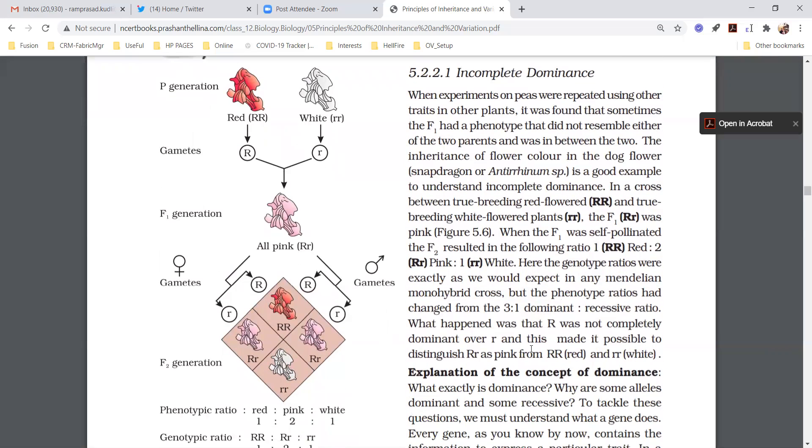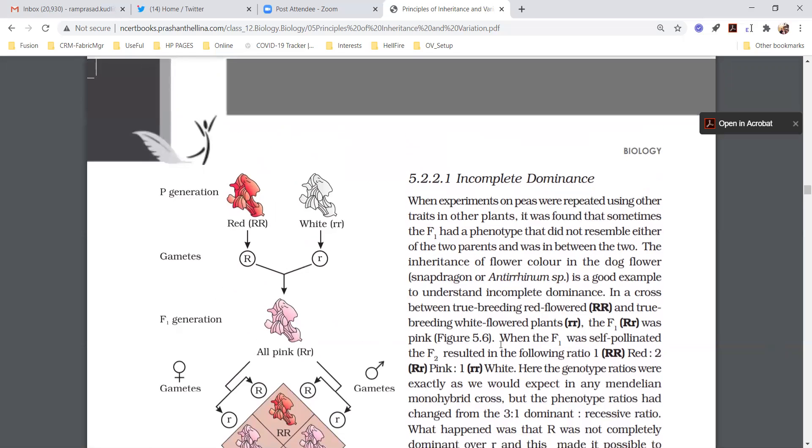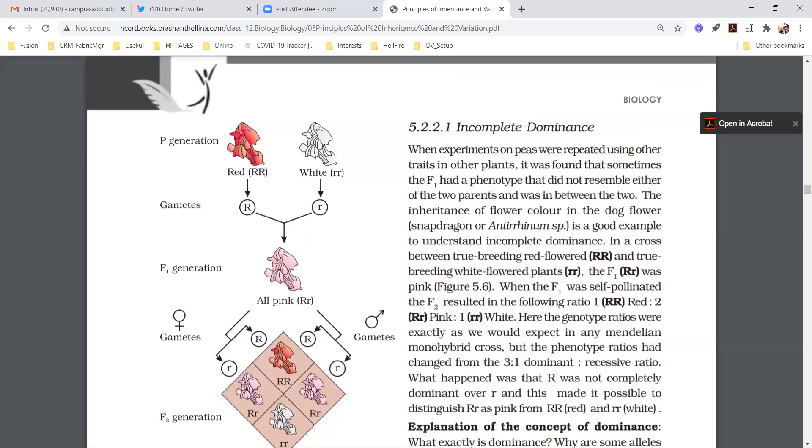So what does it indicate? R was not completely dominant over small r. This made it possible to distinguish pink color from red and white. This type of dominance we call incomplete dominance. In the exam, if they ask incomplete dominance, you can write this chart.